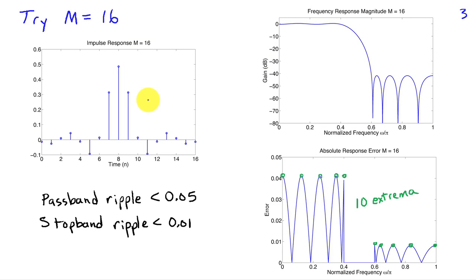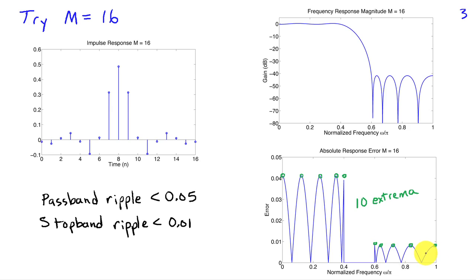We decided to try M equals 16, the next even integer for order. Again, you see that the impulse response is symmetric about 8, or M over 2. The gain of the filter has more than 40 dB of attenuation in the stop band. And if we look at the absolute response error, we see that in the pass band it's less than 0.05 — which was the specification — and it's also less than 0.01 in the stop band. So this particular filter does indeed meet our specification. We've increased the order from M equals 14 to M equals 16. M over 2 plus 2 extrema would give us 10 extrema, and indeed we see those 10 extrema.